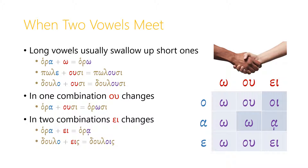These patterns of combination can be represented by this chart here, where you can see that omega always swallows up any of the short vowels. The omicron-upsilon diphthong usually swallows up a short vowel except for alpha, where it combines to become omega. And the epsilon-iota really only swallows up the epsilon — epsilon seems to be the weakest of the short vowels. Instead, when it meets alpha we get the alpha with iota subscript, and when it meets omicron we get oi.